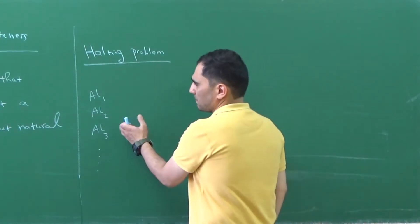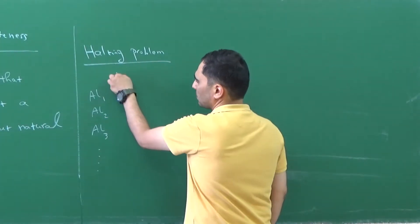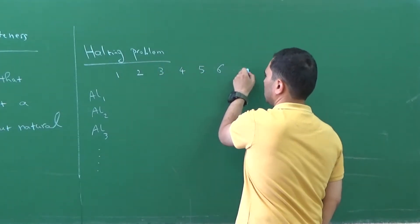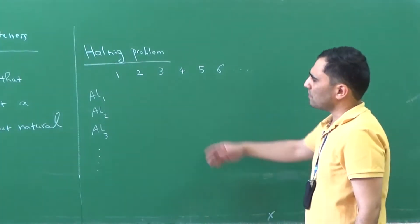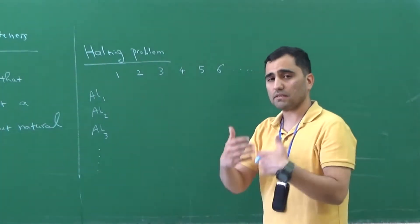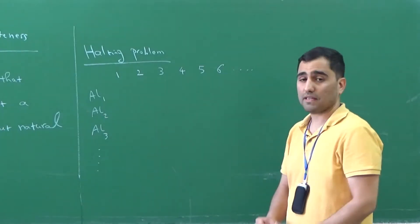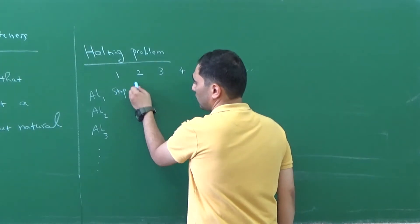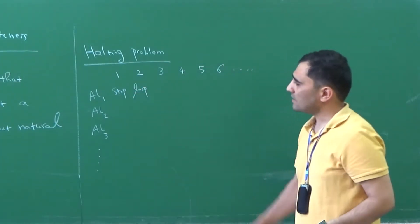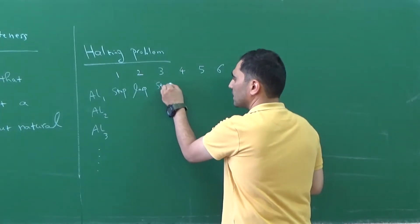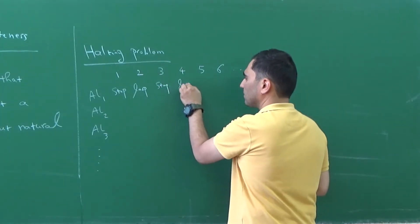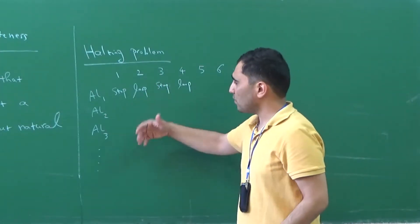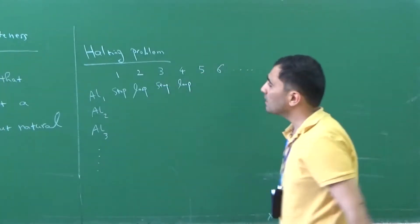Each of these algorithms that I have listed gets a natural number as an input — 1, 2, 3, 4, 5, 6, and so forth. When I give a natural number as an input to each of these algorithms, the algorithm starts to work, and it may happen that the algorithm stops or gets into a loop. So I have a table of stops and loops — each of these algorithms, given a natural number, stops or gets into a loop.